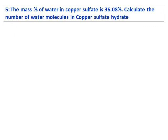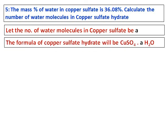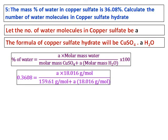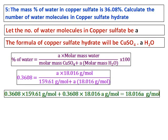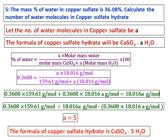Let's do one slightly more difficult question: the mass percentage of water in copper sulfate is given, and we need to calculate the number of water molecules in copper sulfate hydrate. Let the number of water molecules be 'a', so the formula is CuSO4·aH2O. The mass percentage formula gives us the number of water molecules times the molar mass of water, divided by the total molar mass. Substituting the values and solving for a, we get a equals 5, so the formula is CuSO4·5H2O.